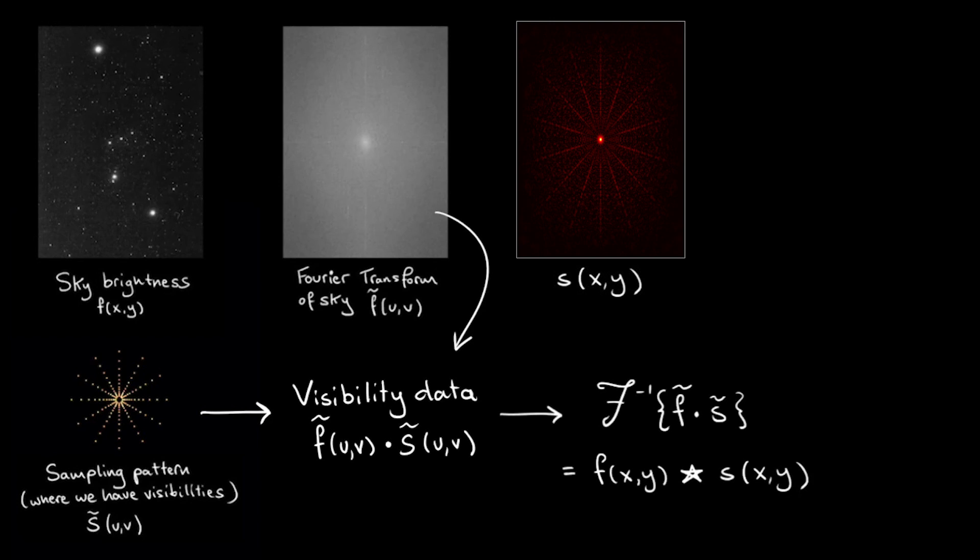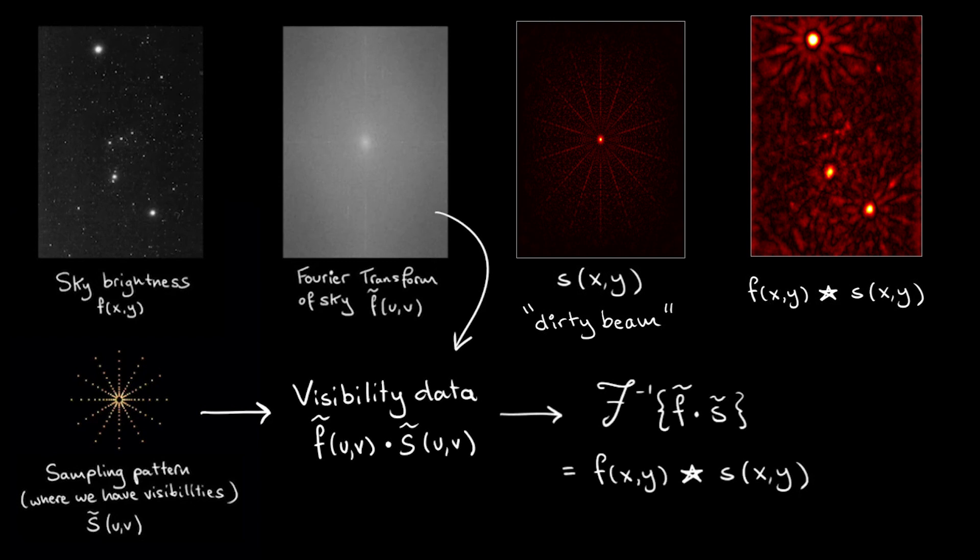This Fourier transform of the sampling pattern is called the point spread function, or PSF, of our image, and in radio astronomy we call it the dirty beam. The images we produce by directly transforming visibility data are called dirty images.